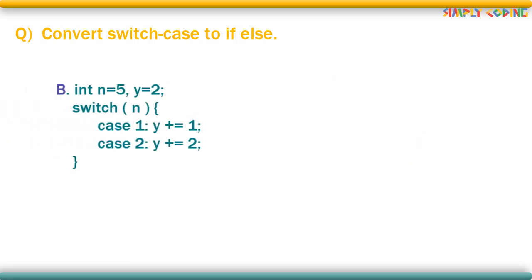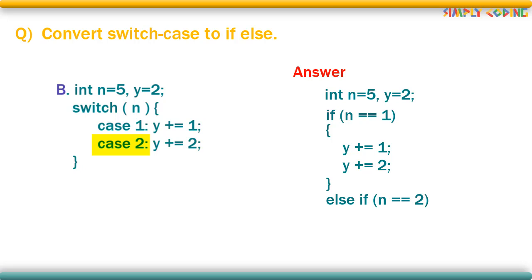Let's take another example which has fall through. Here too to get the answer, first we will copy all the statements before the switch as is. Then if you see the switch, it does not have any break in case 1. So you will write your if statement if n is equal to 1 and inside it you will write the statements of both case 1 and case 2. So it will execute both y plus is equal to 1 and y plus is equal to 2. Then you will write else if n equal to 2 and in it write only y plus is equal to 2. This is your answer for this question.